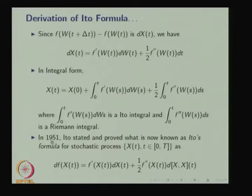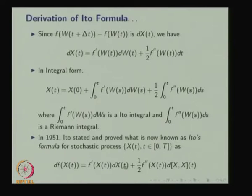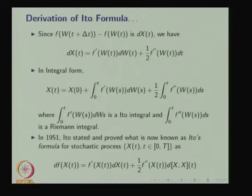Now the general definition: in 1951, Itô stated and proved what is known as the Itô formula. For a stochastic process x, df(x) = f′(x) dx + (1/2) f″(x) d[x]_t, where d[x]_t is the quadratic variation of x over [0, t]. The increment of f equals f′ dx plus (1/2) f″ times the quadratic variation of x.